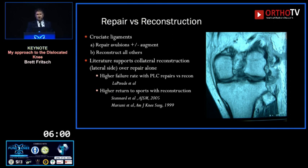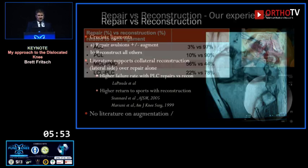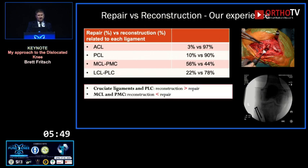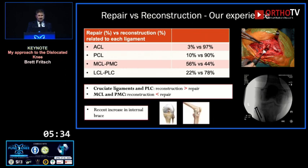Stannard and Mariani's papers support being very cautious if you're just going to do an isolated repair — there is a role for it but I always consider reconstruction. In our series, cruciate and posterolateral corner reconstructions far outnumber repairs, though direct posterolateral corner repair rate was 22% — all cases with a large fibular head fragment allowing a very solid repair. Recent use of internal brace augmentation hasn't fully come out in our data yet.